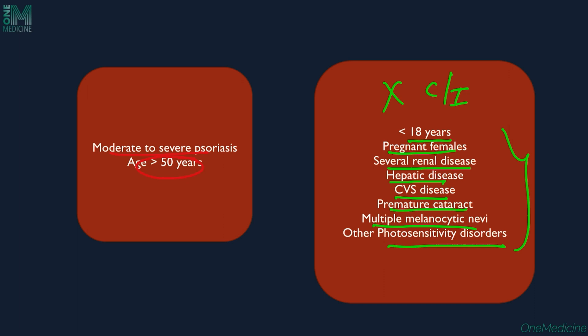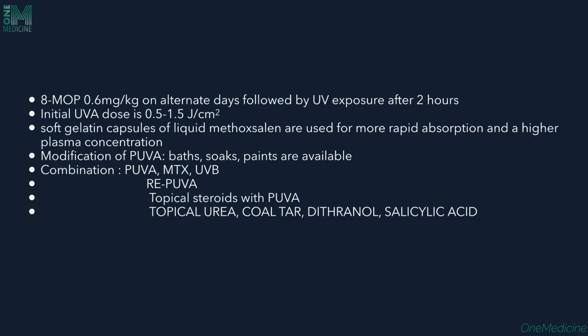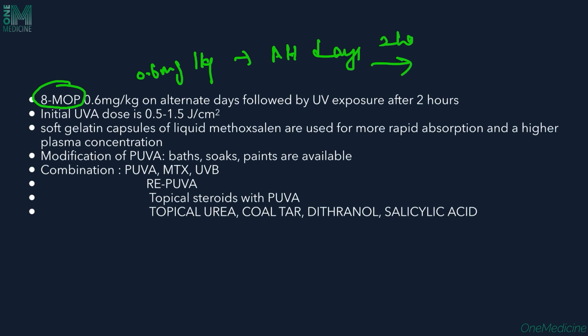When using 8-methoxypsoralen, we give 0.6 mg/kg orally on alternate days. After the patient takes it in the morning, they can be exposed to sunlight two hours later — either natural sunlight or in artificial chambers. The starting dose is 0.5 to 1.5 joules per centimeter squared. Both oral tablets and liquid formulations are available.